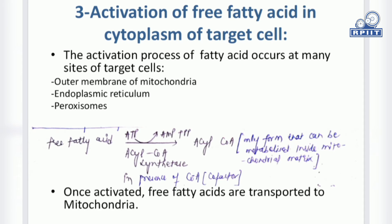The third step involves the activation of free fatty acids in the cytoplasm of target cells. This can occur at many places like the outer membrane of mitochondria, endoplasmic reticulum, and some peroxisomes. Here, the free fatty acid molecule is converted in the presence of acyl coenzyme A, which is the only form that can be metabolized inside the mitochondrial matrix by the enzymes present there.